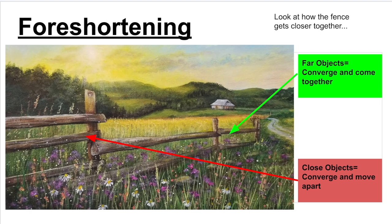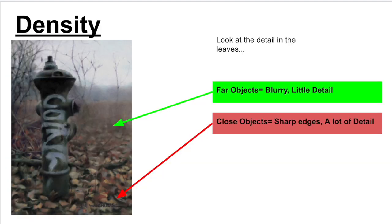Foreshortening is when far objects converge and come together and close objects converge and move apart — notice the fence. Density is where far objects are blurry and have little detail, and objects that are closer are more in focus and we can typically see more detail.